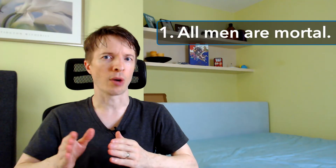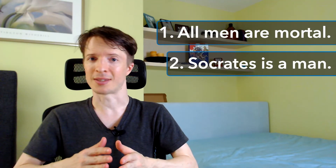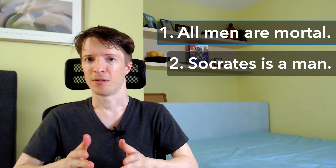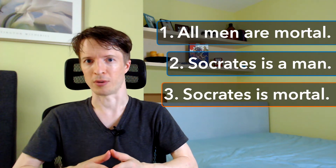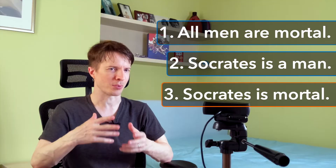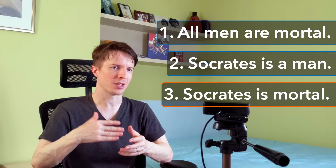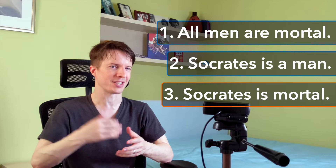The classic example of a deduction goes like this: All men are mortal. Socrates is a man. Therefore, Socrates is mortal. In the beginning, we have some premises, and we have a conclusion that follows logically from those premises. With a deduction, if the premises are true, then the conclusion must be true.